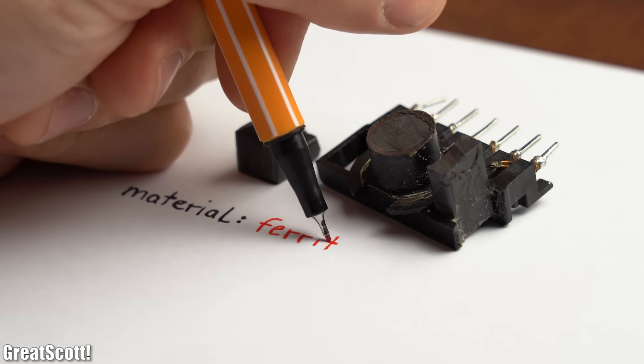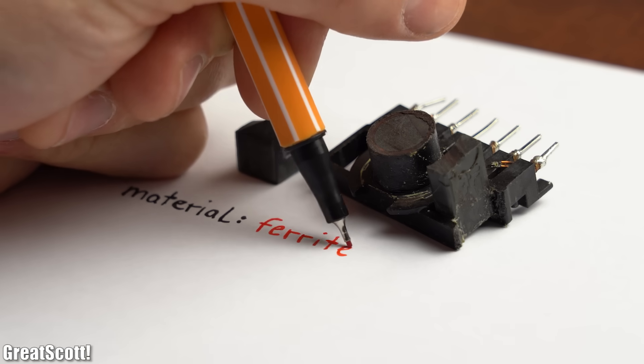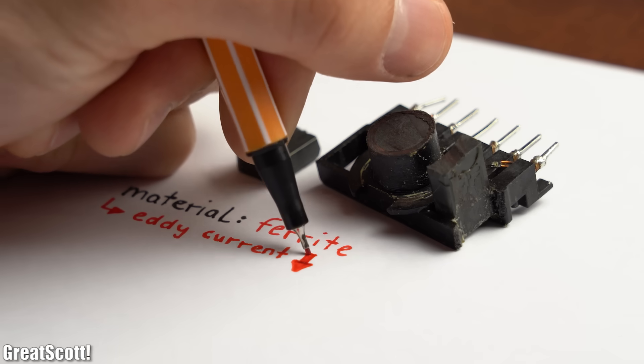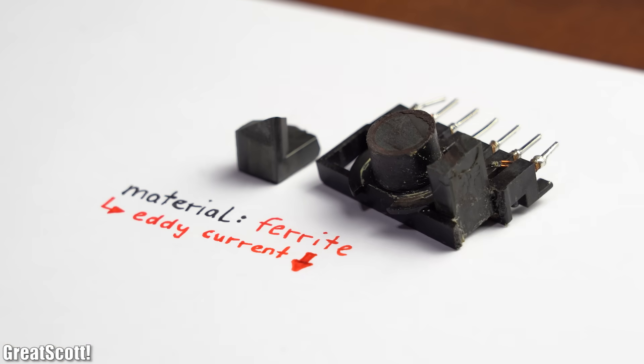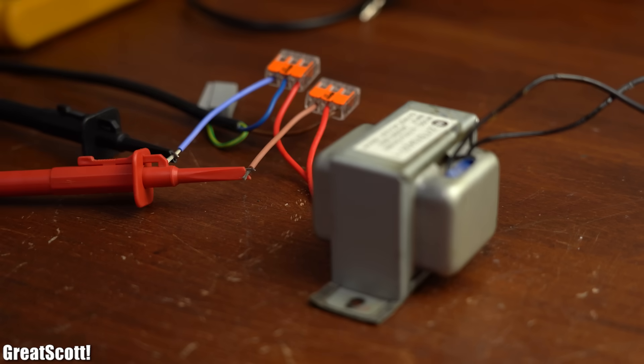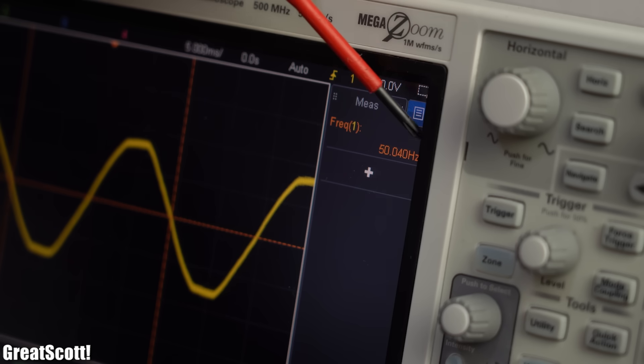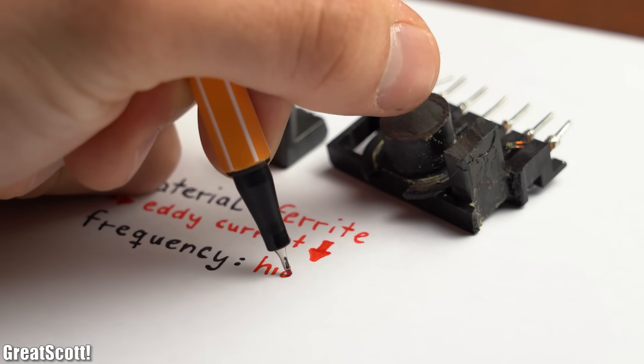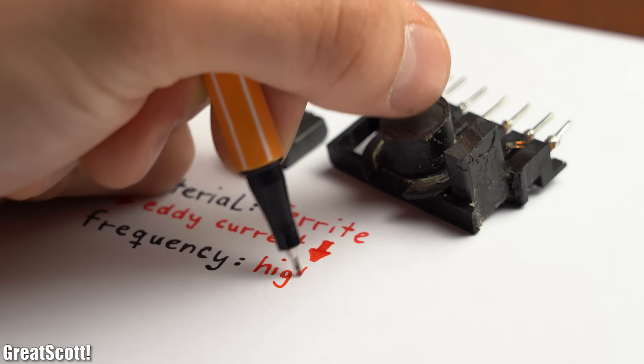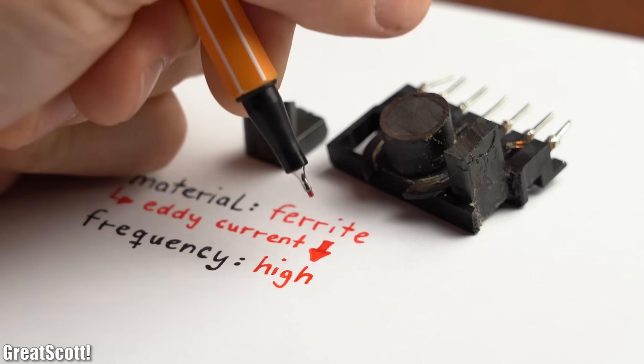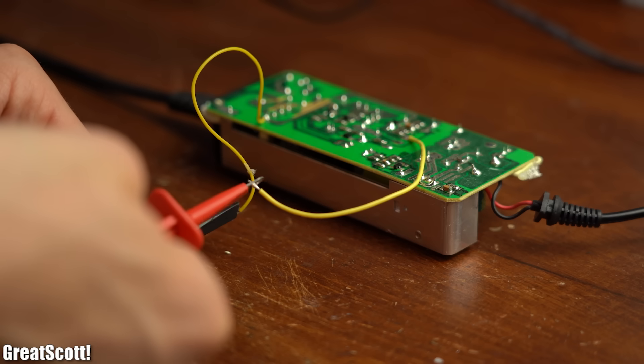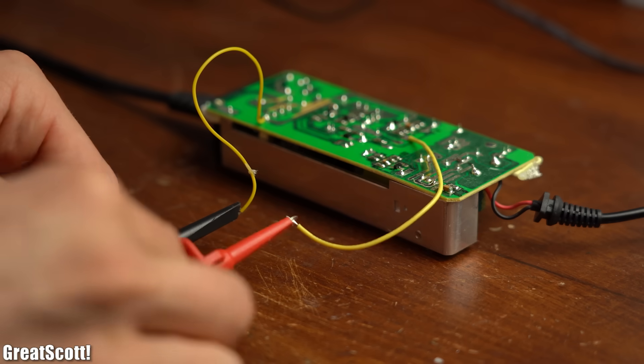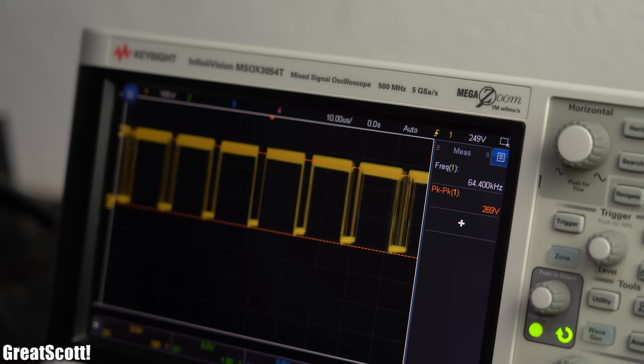Because before that, let's talk about the ferrite material which is used in order to keep the eddy currents low. Those need special attention this time in comparison to a mains transformer because the flyback transformer gets used with a much higher frequency and thus it would be able to create way bigger eddy current losses.